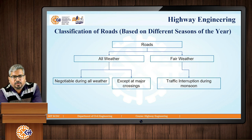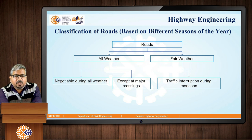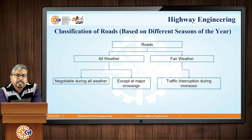Next is the classification of roads. The first type of classification is based on different seasons of the year. Roads can be classified into all-weather roads, which are negotiable during all weather types with only exceptions at major crossings when water levels are too high, and fair-weather roads, where traffic interruptions occur during the monsoon season.